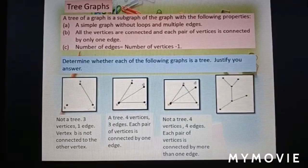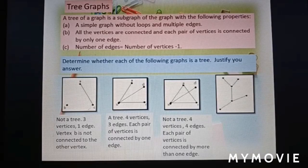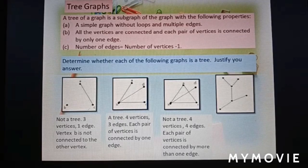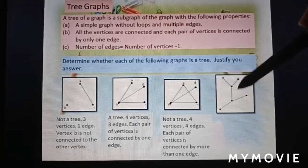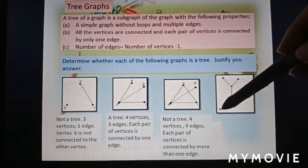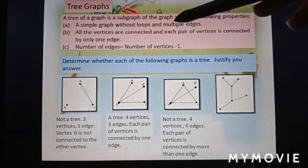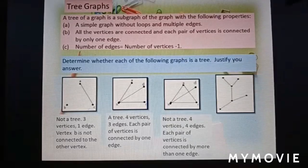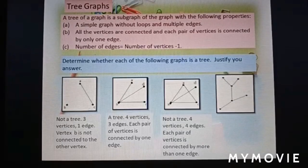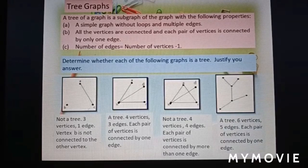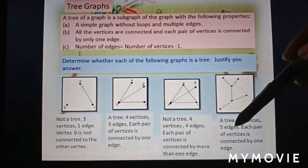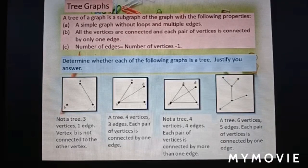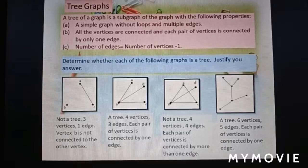We look at the last diagram. Is it a tree graph? We count 1, 2, 3, 4, 5, 6. 6 vertices. So number of edges is 6 minus 1 equals 5. Counting edges: 1, 2, 3, 4, 5. Yes, this is a tree graph. 6 vertices and 5 edges. Each pair of vertices is connected by 1 edge.